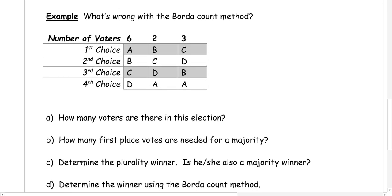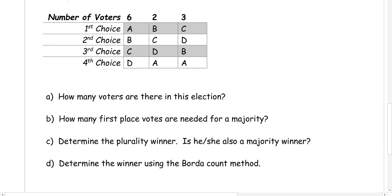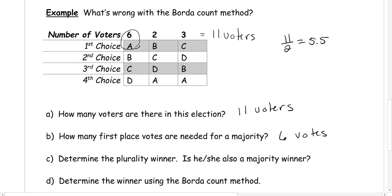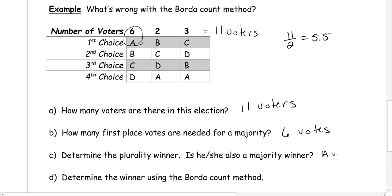Now we're going to look at what's wrong with the Borda Count method using a second example. How many voters are there in this election? We have 6 plus 2 plus 3, that's 11 total voters. For a majority, we take 11 divided by 2, which gives 5.5, so we need 6 votes for a majority. Candidate A has 6 first place votes, so candidate A wins — and yes, A is the majority winner.